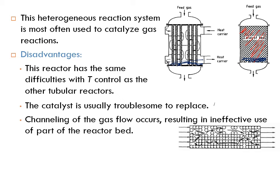Once a year or once every three years, catalyst replacement may be acceptable. But sometimes you need to change the catalyst every minute or even every few seconds — removing it, regenerating it, and bringing it back. In that case a packed bed reactor is not suitable. Another disadvantage is channeling of gas flow, resulting in ineffective use of part of the reactor bed.